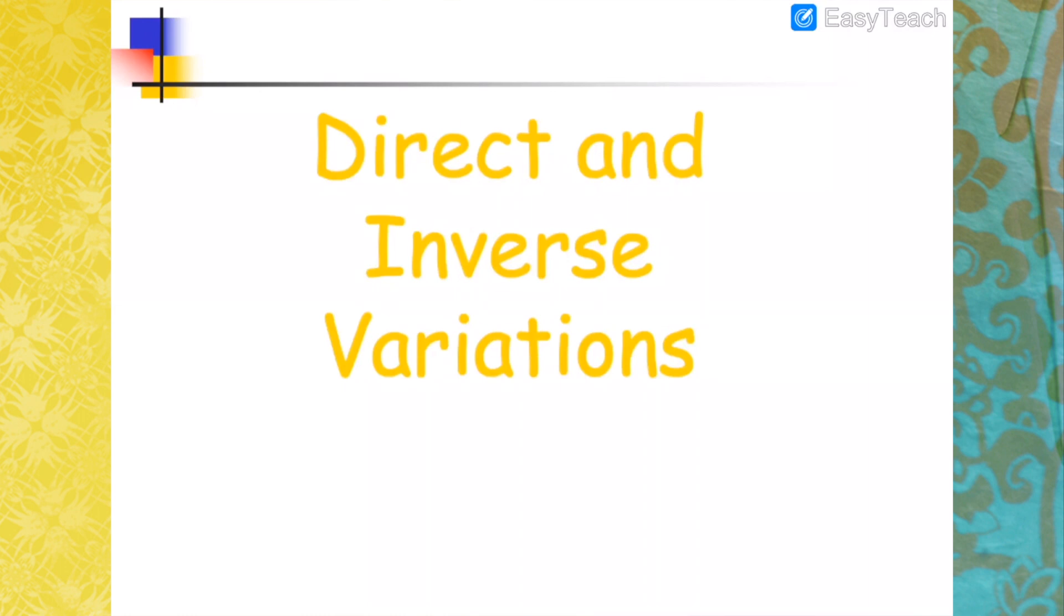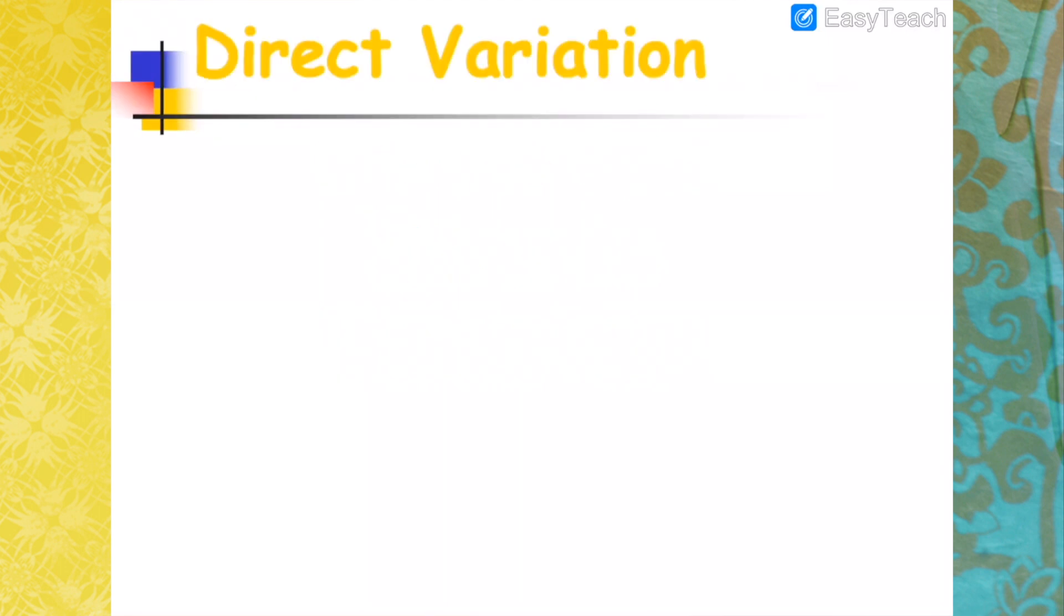Direct and inverse variation. Now for this topic, we will talk about direct variation first. When we say direct variation, we are talking about relationship. So if we have relationships in direct variations, that means we will have an X and a Y. We will look into the X and Y relationship.